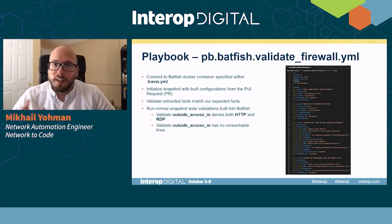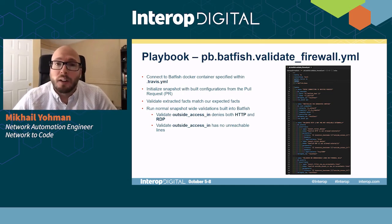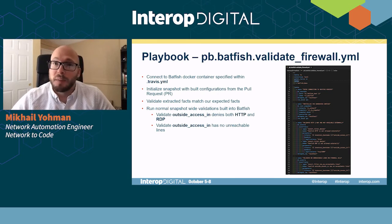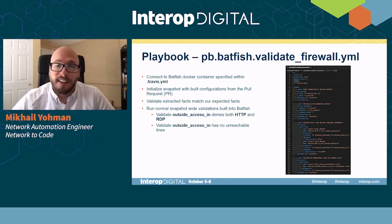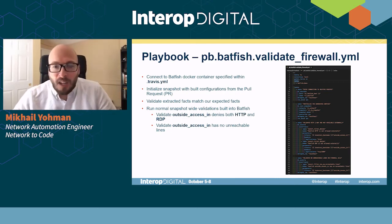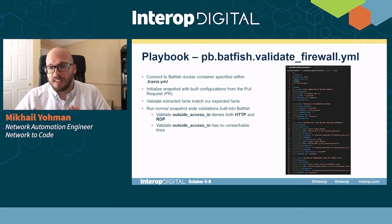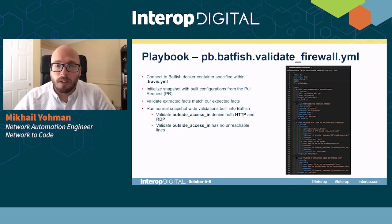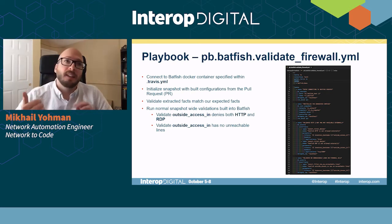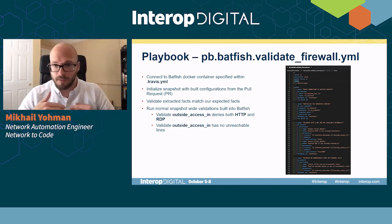We'll take a look at the playbook we built to validate these requests. The biggest difference here is the host is no longer localhost — it's running against a firewall group. We only have one firewall in it right now, but it's going to do the same steps: connect to Batfish, upload the snapshot, and then we have a task that validates HTTP and TCP port 3389 (RDP) are not allowed. On line 31, we're using the inventory hostname variable, which is a built-in Ansible magic variable, and we're asserting on the outside access-in access list for the firewall. As we add more firewalls to our edge, this will run against all of them, so we can guarantee these policies are checked for all our firewalls.